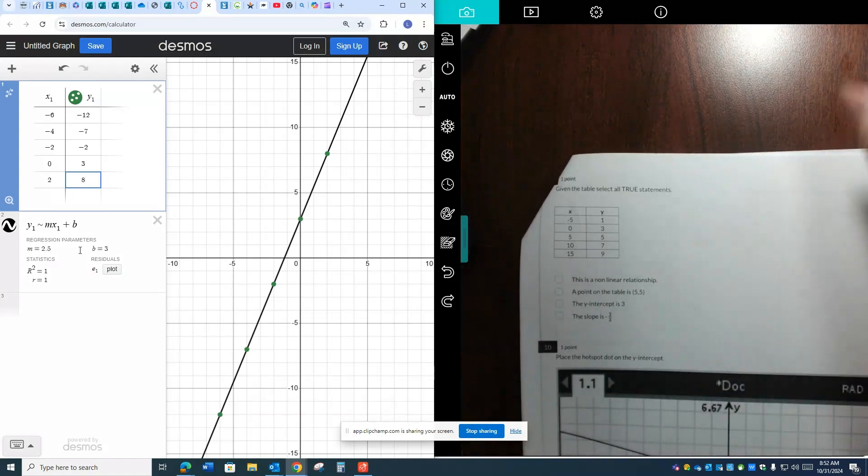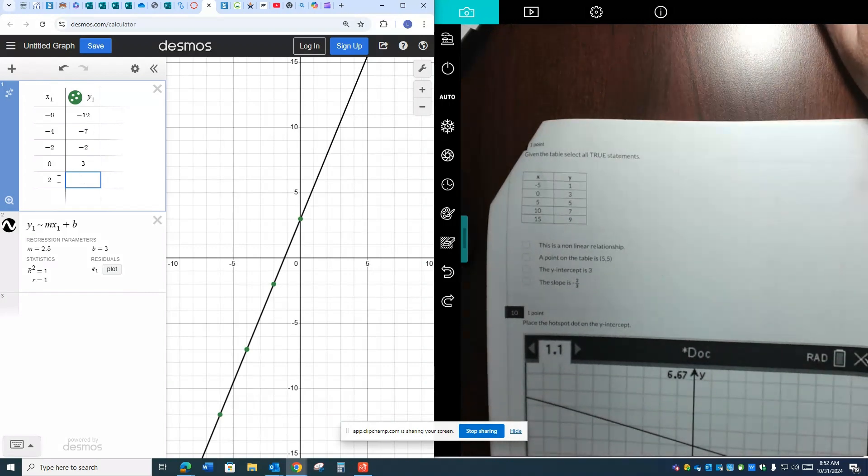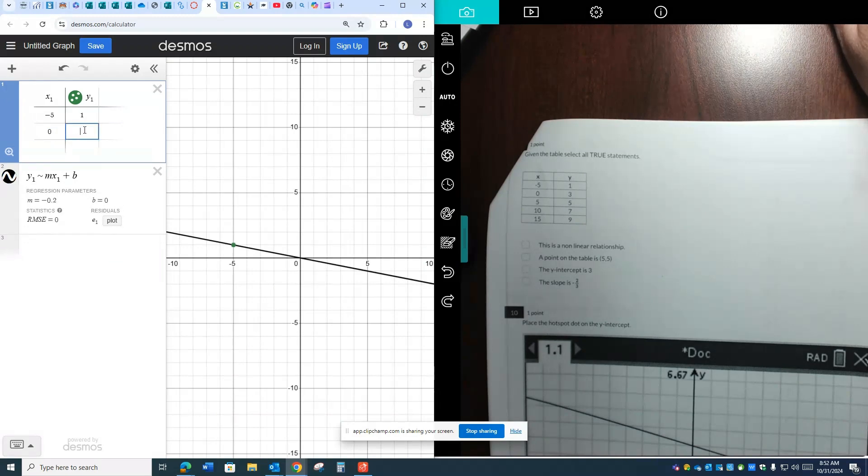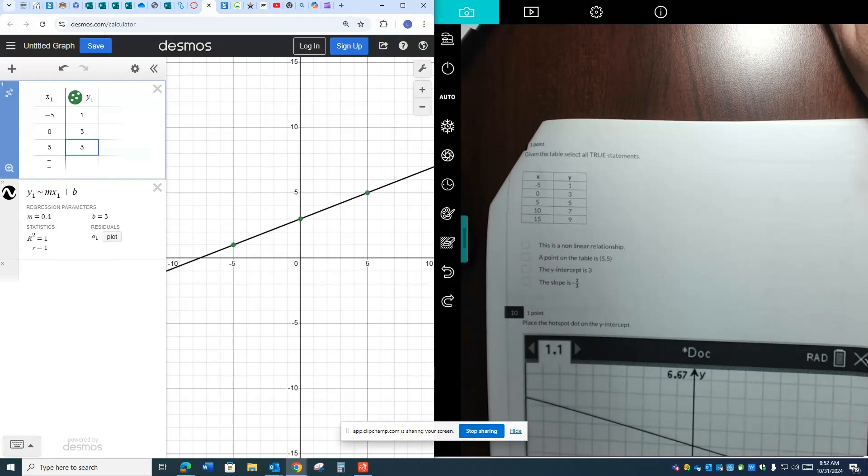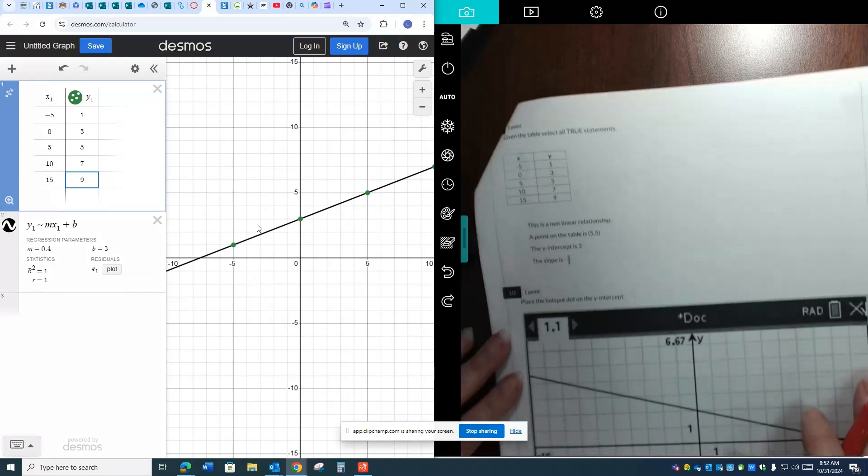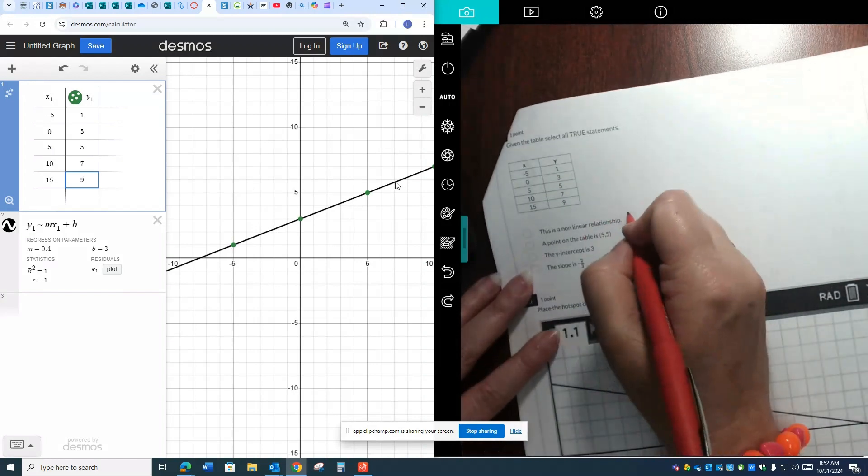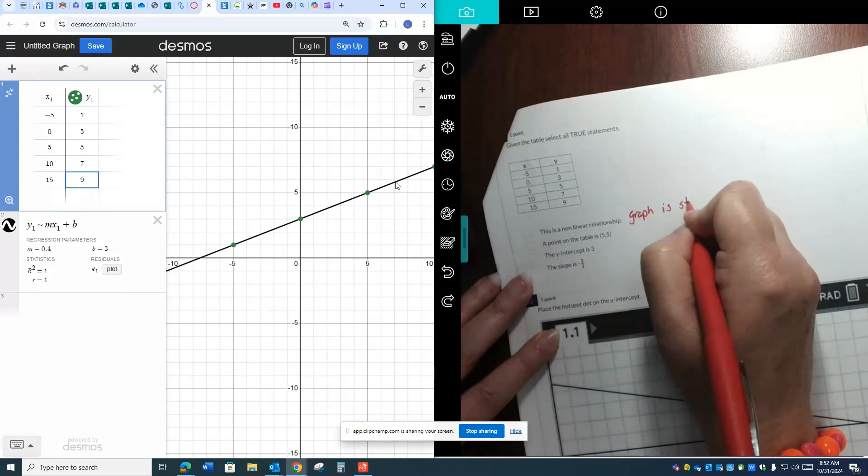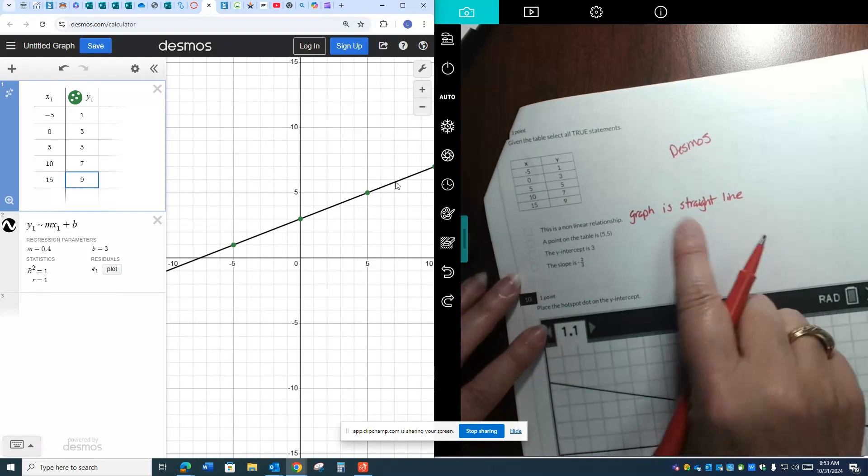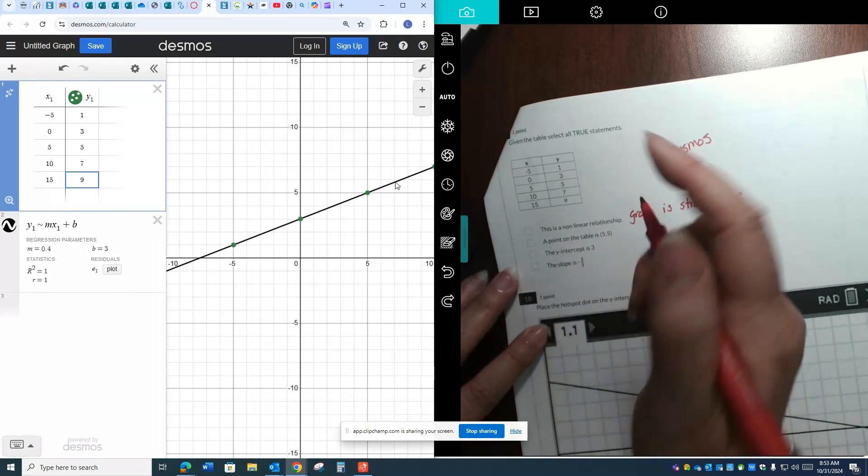Okay. All true statements. So this one we might want to do Desmos for. So again, I am not going to get rid of my table. I'm just going to delete the data. And I'm going to go put this new data in. Negative 5 is paired up with 1. 0 is paired up with 3. 5 is paired up with 5. 10 is paired up with 7. And 15 is paired up with 9. Gives me my m and my b. It graphs the line for me. I can see right here the line. So it says this is a nonlinear relationship. This made a straight line. The graph is straight. So in Desmos, it gave us a picture and the graph was straight. So this says nonlinear. Nope. It is linear. So this is a no. We're looking for everything that's true.